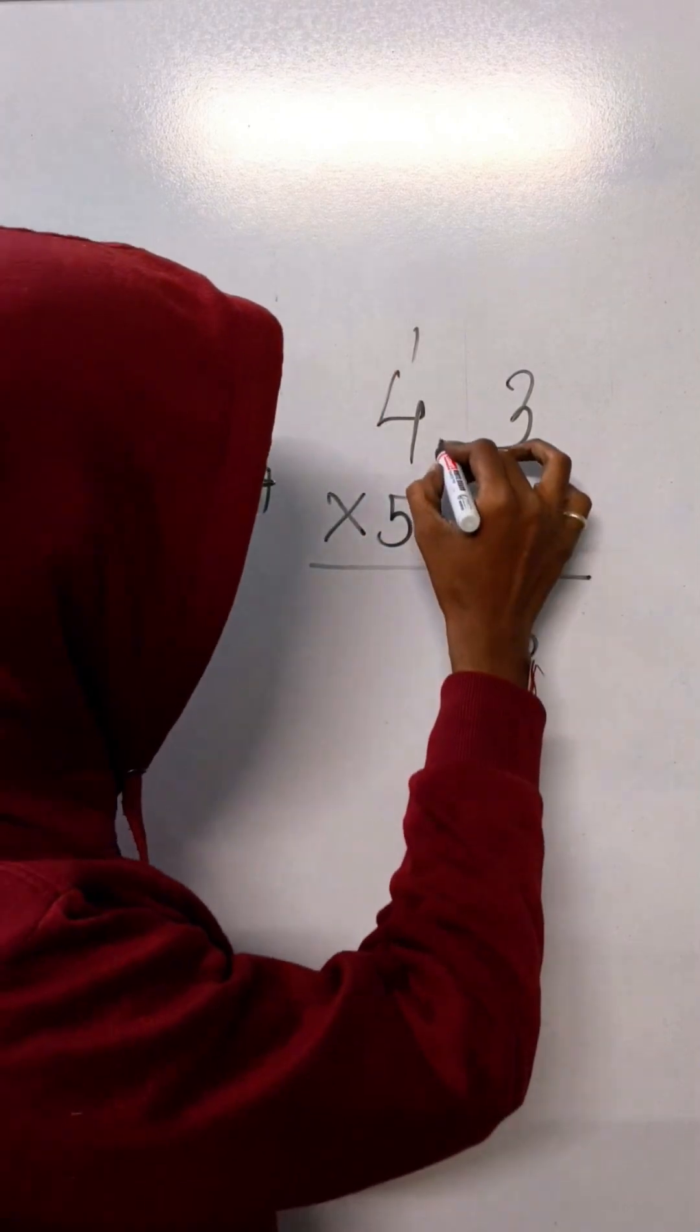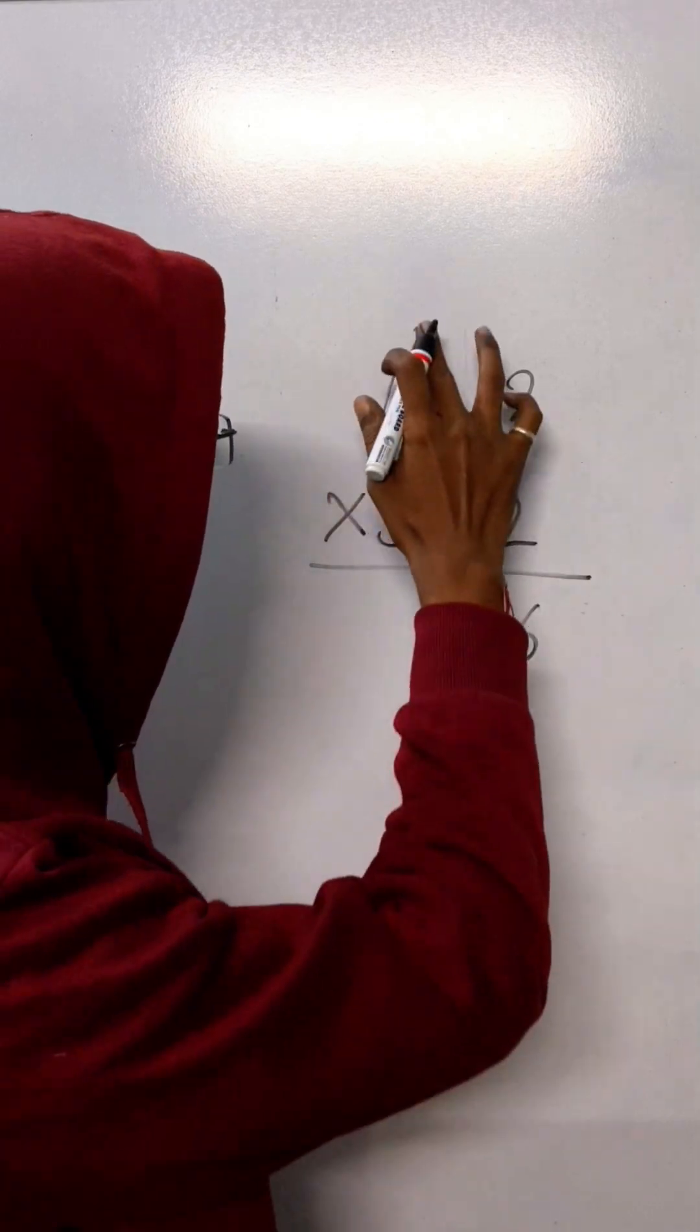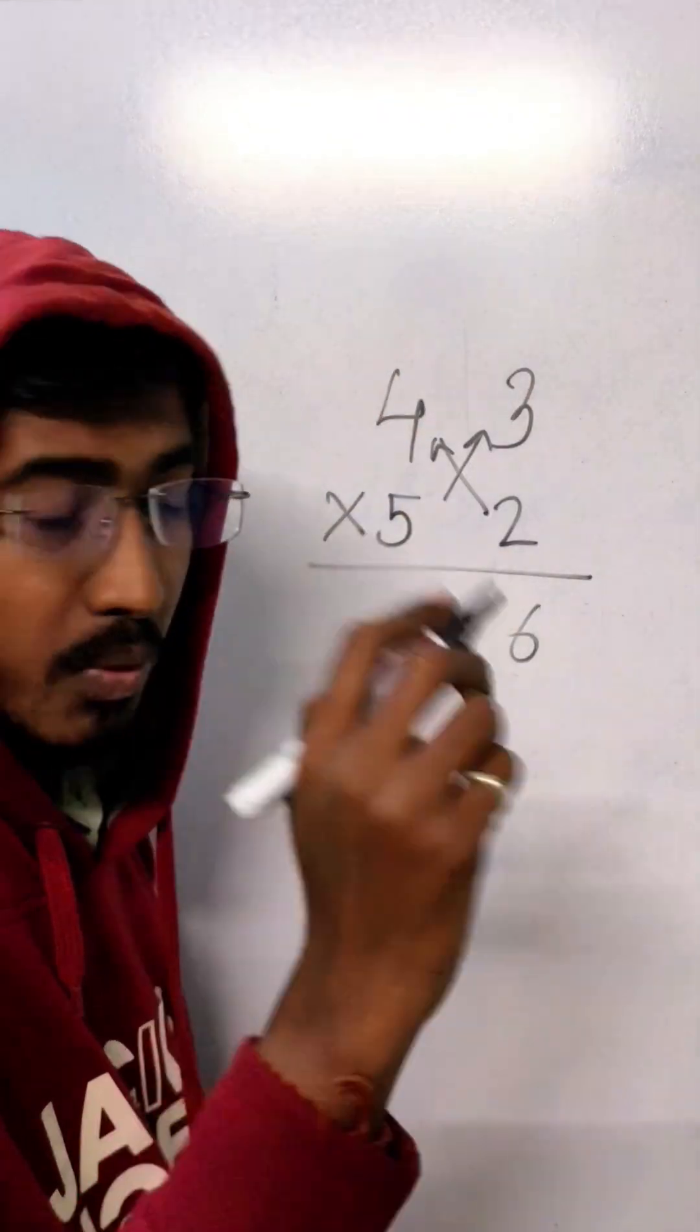3 2s are 6. Now cross multiply. 4 2s are 8, 5 3s are 15. Add it. 8 plus 15 is 23.